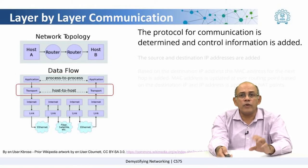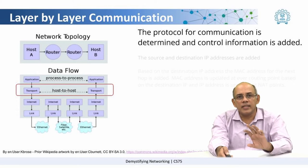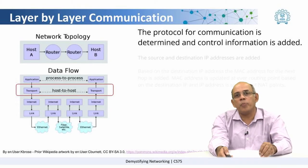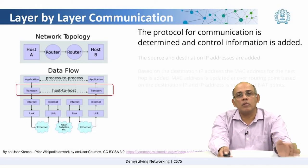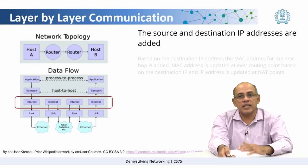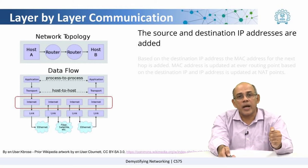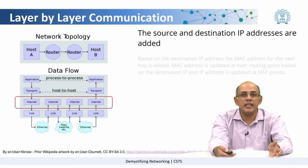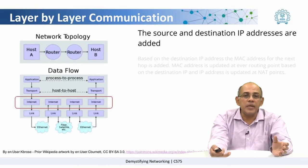Then when the protocol for communication is determined, the corresponding control information is added. For example, if the protocol is TCP, then corresponding TCP ports are opened, TCP sequence numbers are decided, and so on. This now becomes a host-to-host communication because packets from one machine are now to be taken to another machine. One level lower, the source and destination IP addresses are attached, making it a network-level communication because the packet is free to go in different routes. Different packets can take different routes from Host A to Host B and they will be reassembled at B.